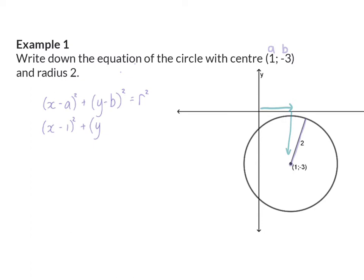It is very important to remember that there is already a minus sign in the equation. You could multiply the two minuses to substitute in plus 3. The radius R was given as 2, which should be squared. So the final answer has y plus 3 squared, and the radius squared is 4.